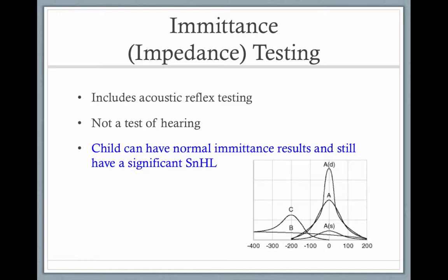The peaks in the tympanogram give you your responses. Type A is considered normal. Type AD isn't too common — that would indicate flaccidity, such as an ossicular discontinuity or breakage of the bones. AS is stiff, symbolic of the start of an ear infection or fluid in the ear. Type B means the middle ear is completely filled with fluid and the eardrum is not moving at all — it's so stiff and fluid-filled that it has a hard time transferring sound, creating conductive hearing loss. Type C is what you would see with negative middle ear pressure.